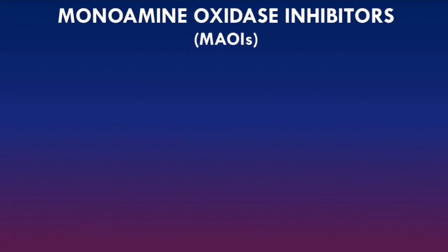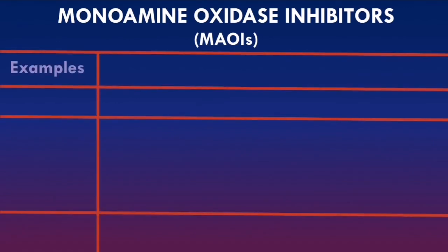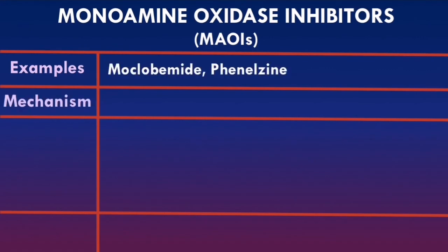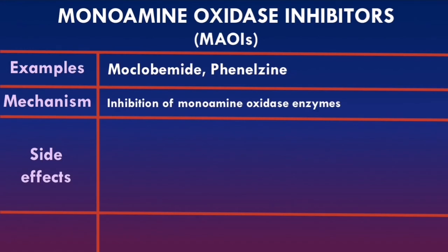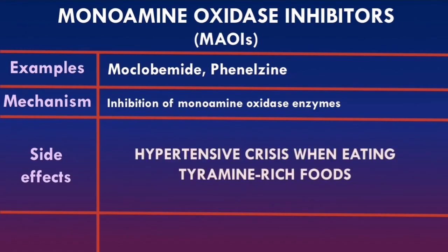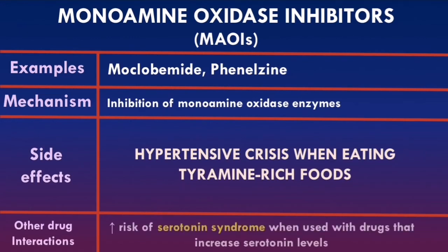Examples of monoamine oxidase inhibitors include moclobemide and phenelzine. Their mechanism is inhibiting monoamine oxidase enzymes, increasing the availability of serotonin, noradrenaline, and dopamine in the synaptic cleft. The main side effect is a hypertensive crisis when eating tyramine-rich foods. Symptoms of a hypertensive crisis include hypertension, tachycardia, hyperthermia, agitation, and arrhythmias. MAOIs also have an increased risk of serotonin syndrome when used with other drugs that increase serotonin levels.